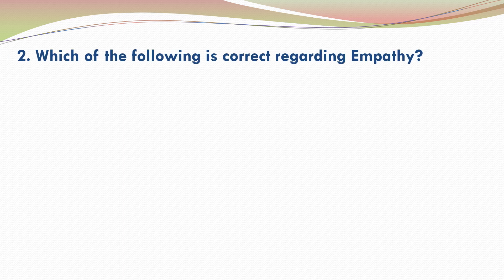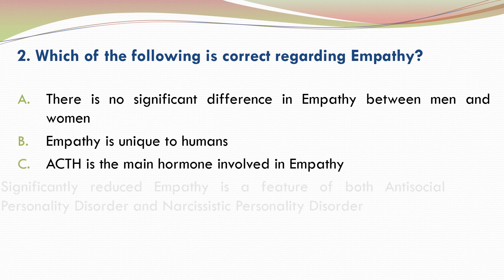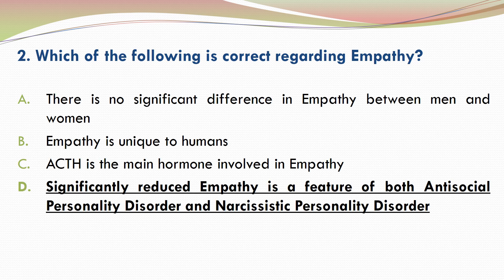Question 2. Which of the following is correct regarding empathy? Please go through the options and make your selection. The correct answer is D. Significantly reduced empathy is a feature of both antisocial personality disorder and narcissistic personality disorder.